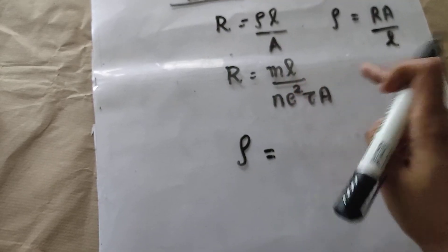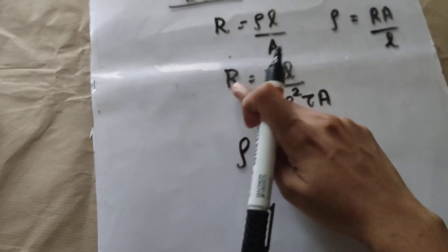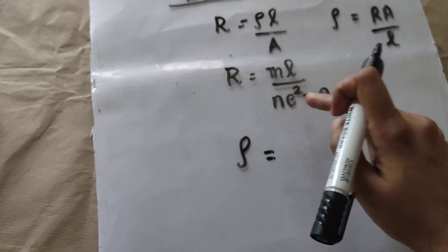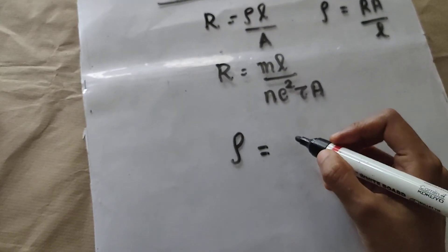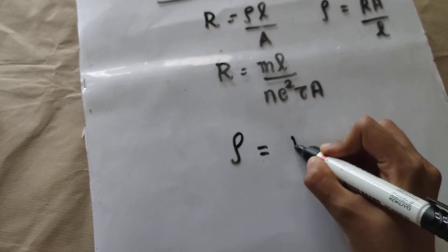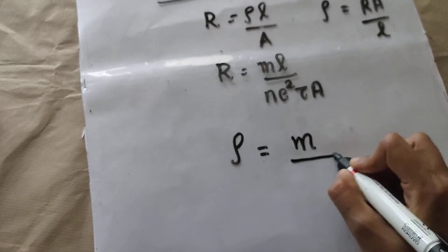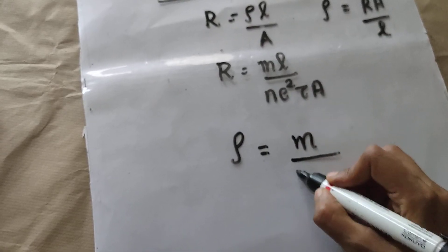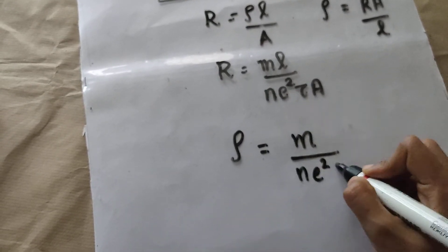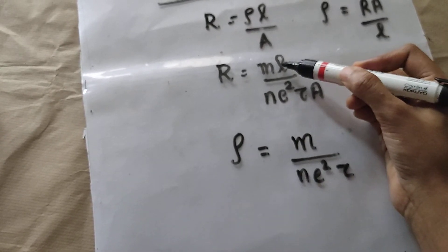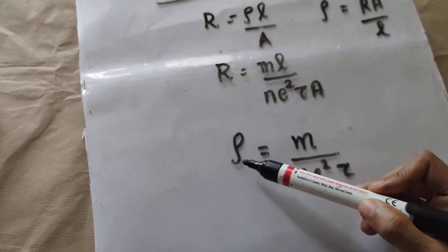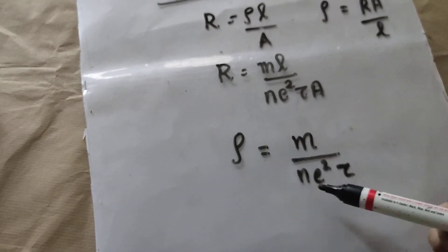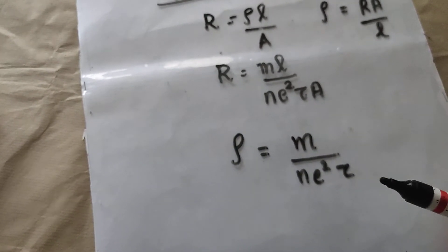Comparing the two equations, we divide by L and multiply by A, so L and A will get cancelled. After cancelling A and L, we get rho = M / (N × e² × tau).